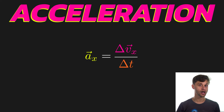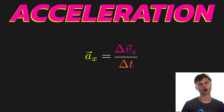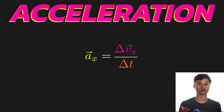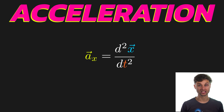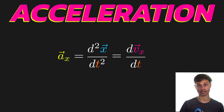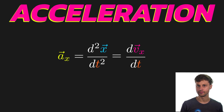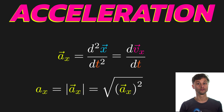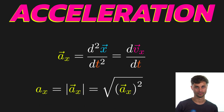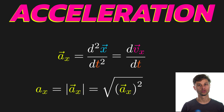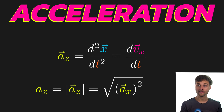Finally, acceleration tells us how much our velocity is changing per unit time — in essence, how much we are speeding up or slowing down. Mathematically, acceleration is equivalent to the second derivative of position, or the first derivative of velocity. To find the magnitude of the acceleration, we can take the square root of the square of the acceleration vector. In one dimension this is straightforward, but in two and three dimensions the formulation looks a bit more complicated.